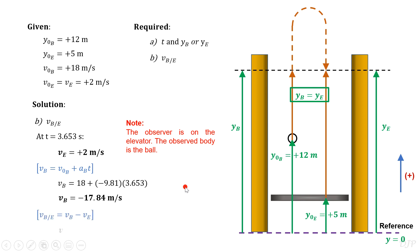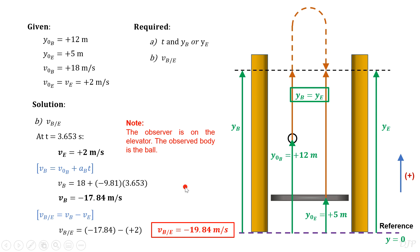Finally, using the formula for relative velocity, we can now have our final answer equal to negative 19.84 meters per second. The negative sign means that if you are on the elevator, it will appear as if the ball is moving downward at a speed greater than the actual, which is 17.84 meters per second. This happens because the new reference, which is the elevator, is moving upward while the ball is moving downward. Therefore, they are both moving towards each other.